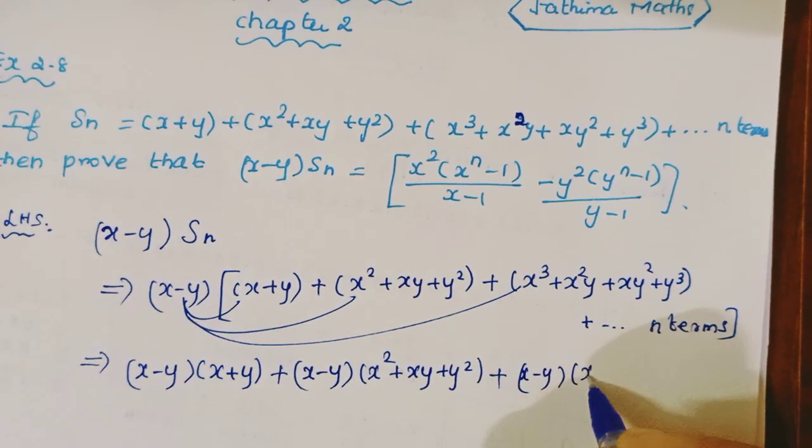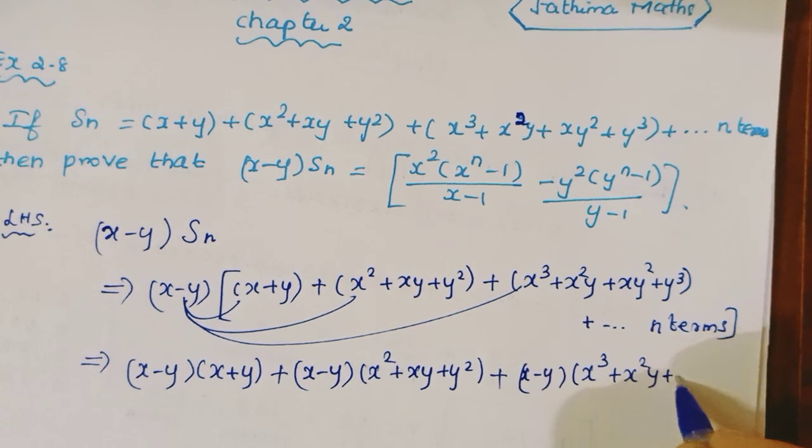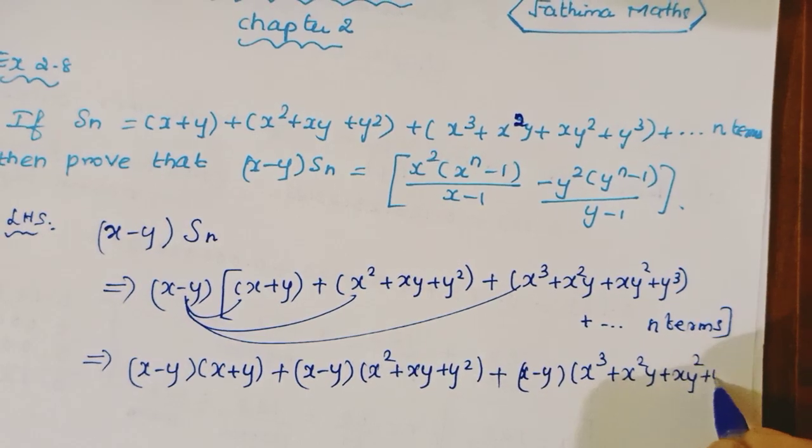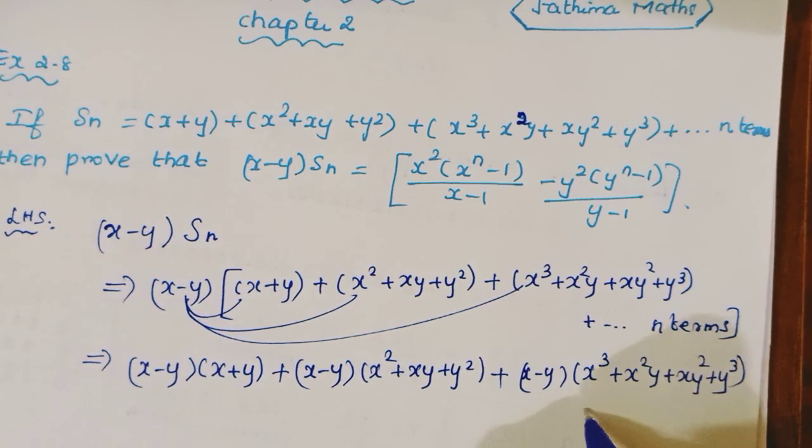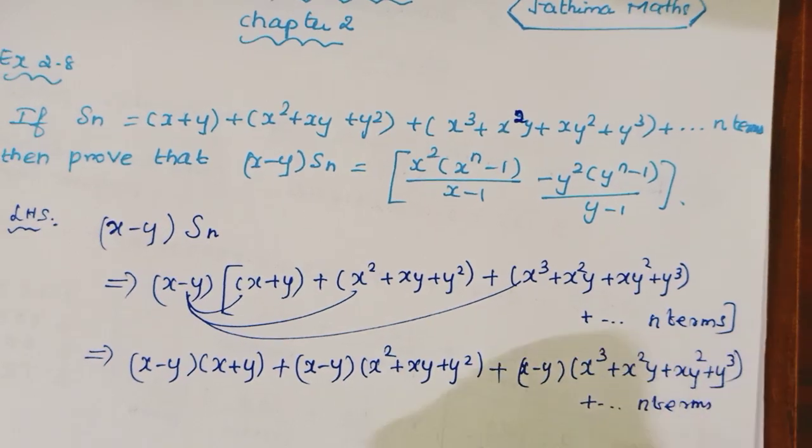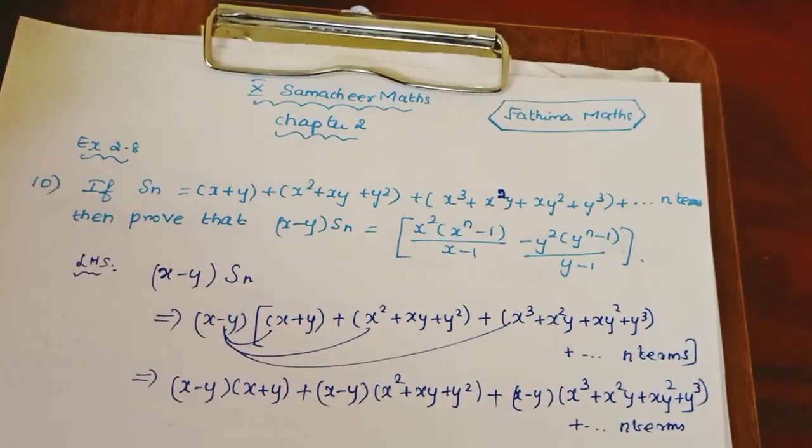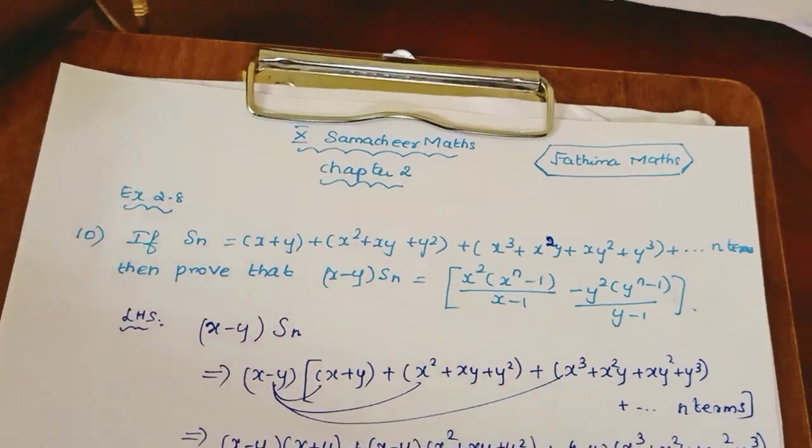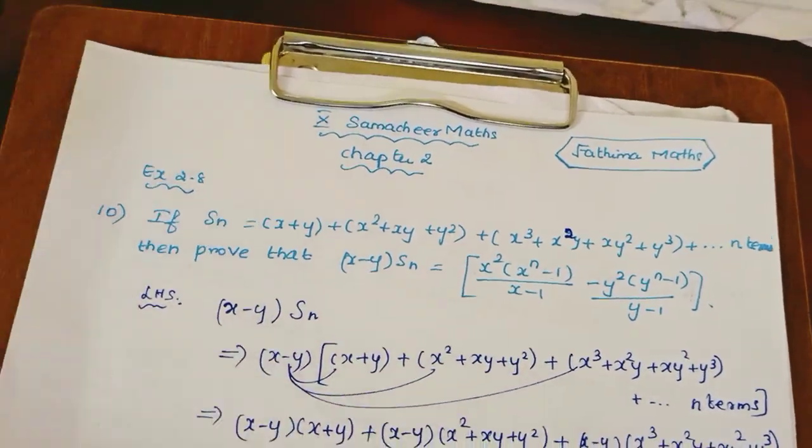Here x³-y³, plus (x-y) into (x³+x²y+xy²+y³) up to n terms.